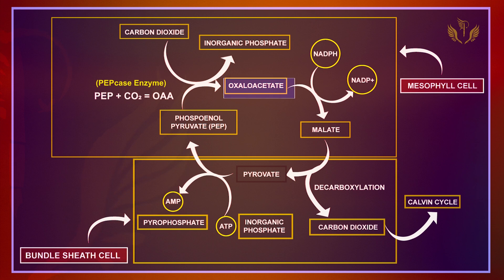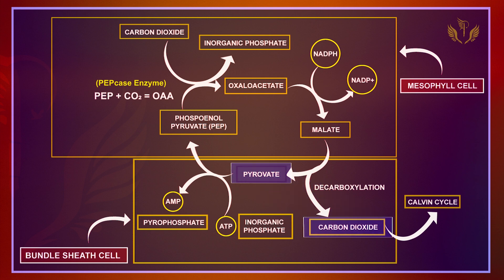From OAA, Malate is formed, which is a 4-carbon compound — this also occurs in mesophyll cells. This Malate then moves into the bundle sheath cells. In the bundle sheath cells, decarboxylation occurs: the carbon dioxide released enters the C3 pathway, and PEP moves back towards the mesophyll cells.